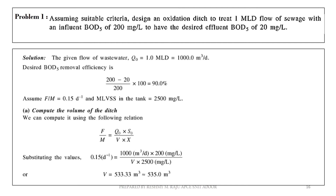Problem: Assuming suitable criteria, design an oxidation ditch to treat 1 MLD flow of sewage with an influent BOD₅ of 200 mg/L to achieve an effluent BOD₅ of 20 mg/L. The BOD removal efficiency is 90%. Assume F/M ratio = 0.15 per day and MLVSS = 2500 mg/L.